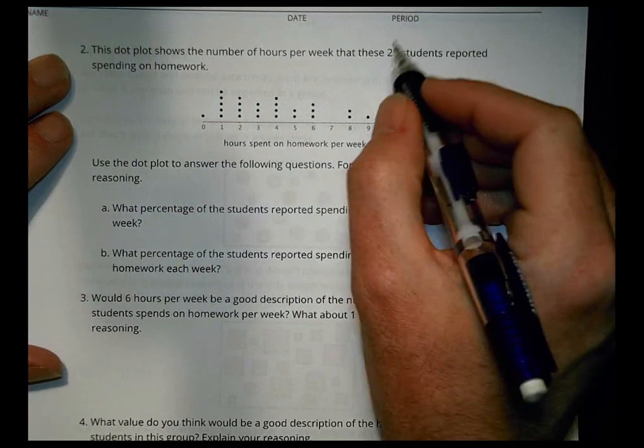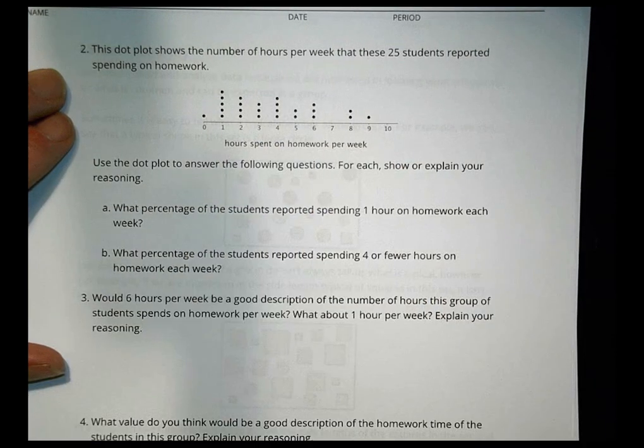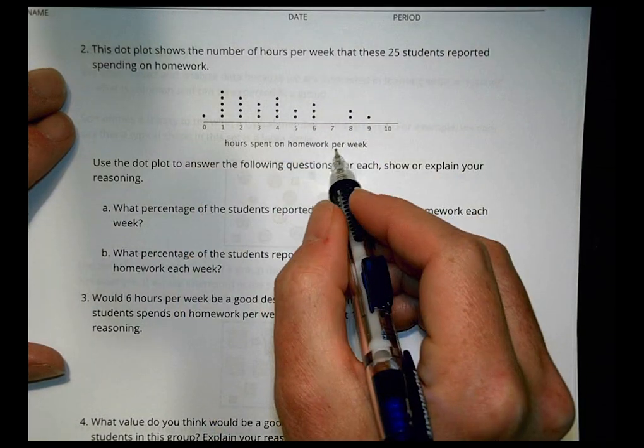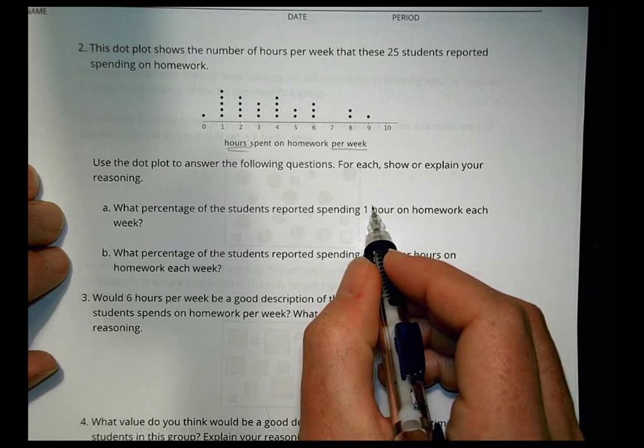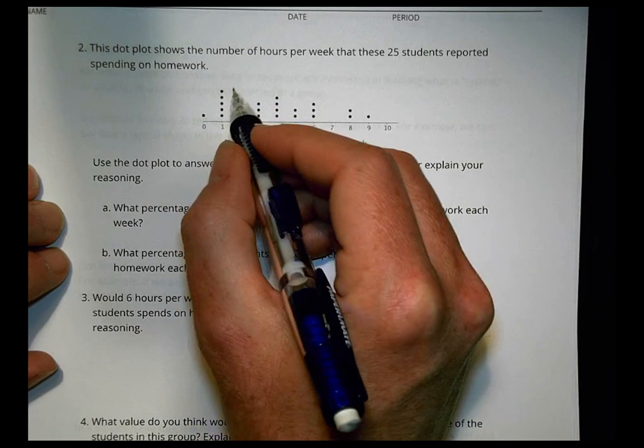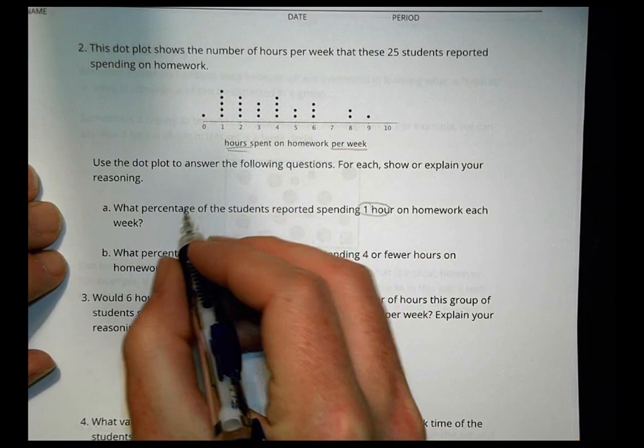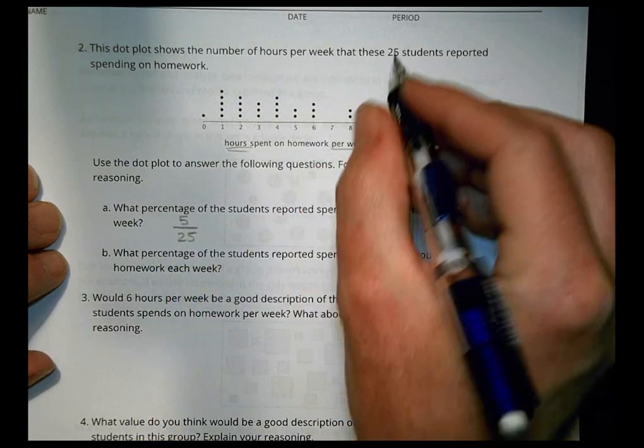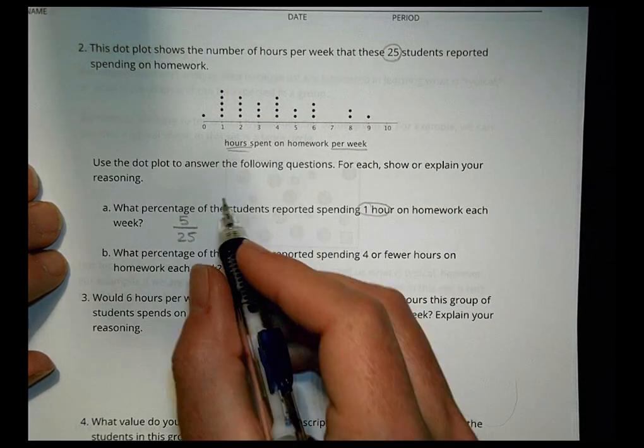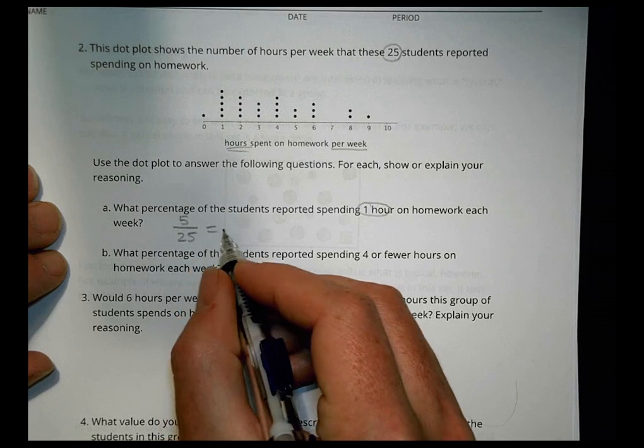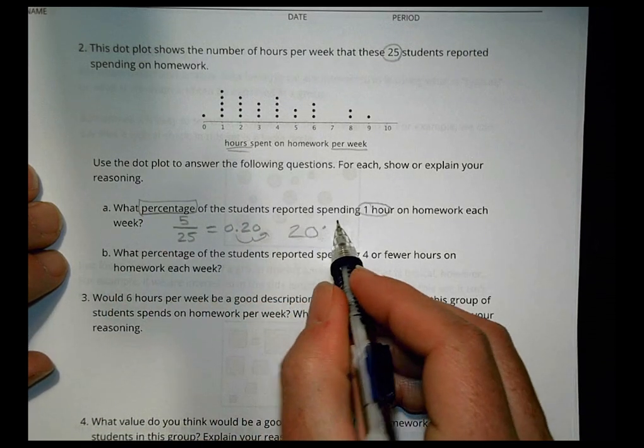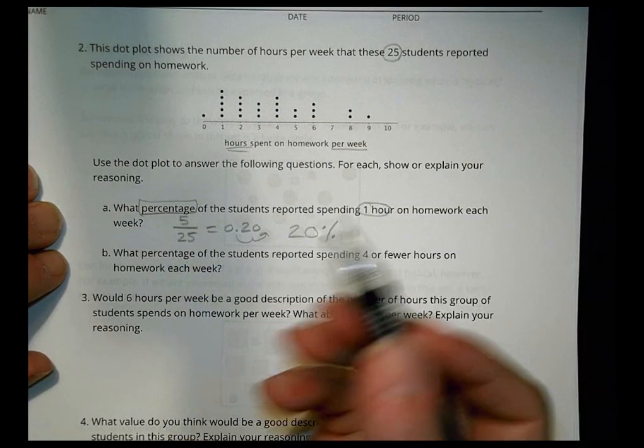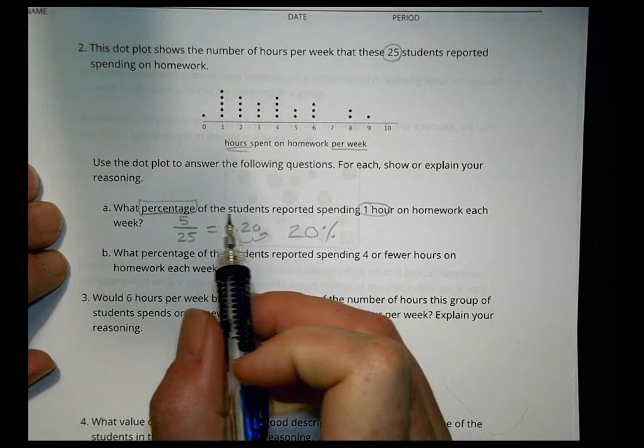So because we're going to get variability and we have to answer it by asking a whole bunch of people and getting some data, that makes it a statistical question. In the dot plot on number two, it shows the number of hours per week that 25 students reported spending time on homework. So someone asked 25 kids and here's how much time they spent on their homework, anywhere from zero hours to nine hours per week. And it's labeled here for us. So use the dot plot to answer this question. What percentage of students reported spending one hour on homework each week? So we look here and we have one, two, three, four, five. Pretty simple to count with the dots, right? So five kids out of 25.